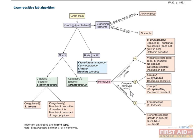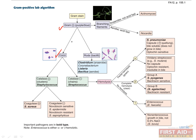Next, let's focus on the shape of the organism. Gram-positive organisms will have one of three main shapes: cocci or circular, bacillus or rod, or branching filament. Let's say that we see a purple-blue cocci-shaped gram-positive organism. This means that there are only two possibilities for the organism we're dealing with: staphylococcus or streptococcus.